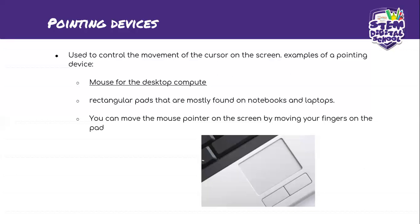In the input devices we have different groups. So the first group is pointing devices. Pointing devices are used to control the movement of the cursor on the screen. Examples of a pointing device: one, we have a mouse for the desktop computer, and we also have what we call a touchpad. For a desktop computer you have a normal mouse — we all know what a normal mouse looks like.